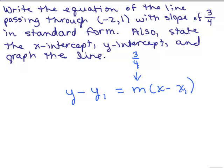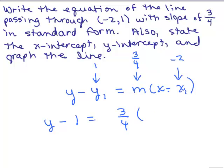For x₁, we'll put in the x-coordinate of our point, which is negative 2, and for y₁, we'll be putting in the y-coordinate. So we have y minus 1 equals 3-fourths times x minus negative 2, so that'll end up being x plus 2.